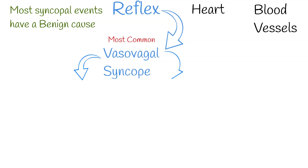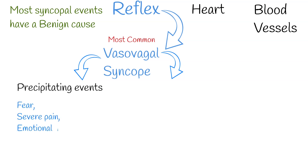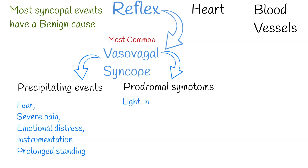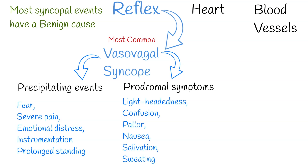Vasovagal syncope is the most common type of syncope and represents reflex syncope. It has precipitating events such as fear, severe pain, emotional distress, instrumentation, or prolonged standing. It is associated with typical prodromal symptoms, which consist of lightheadedness, confusion, pallor, nausea, salivation, sweating, or other symptoms.